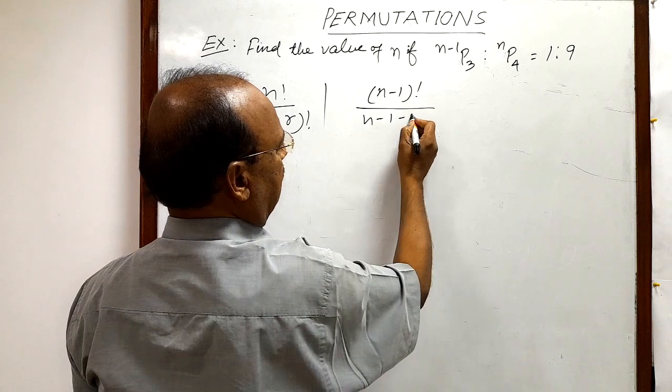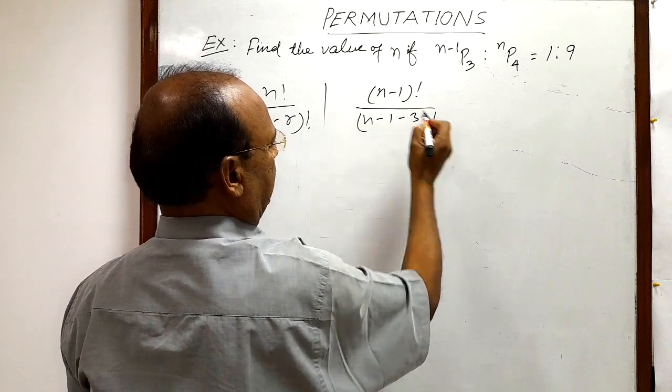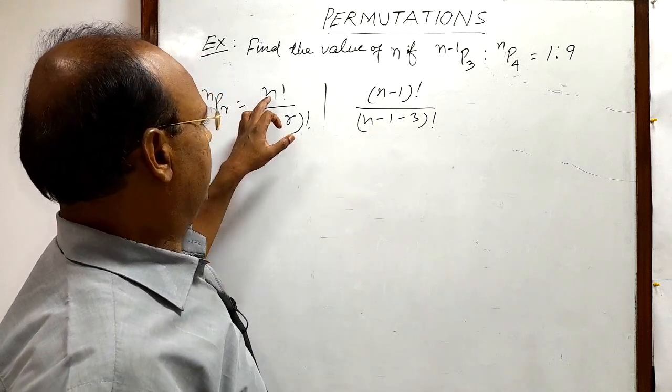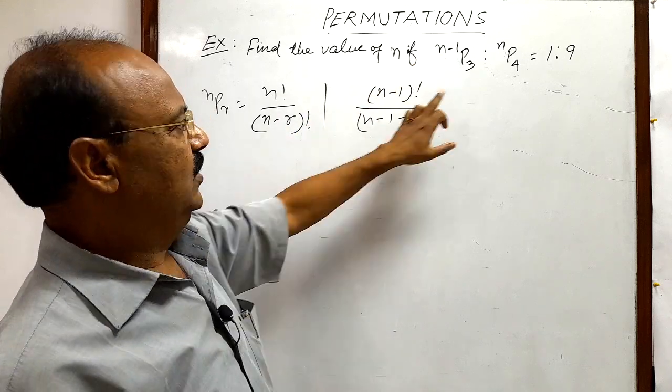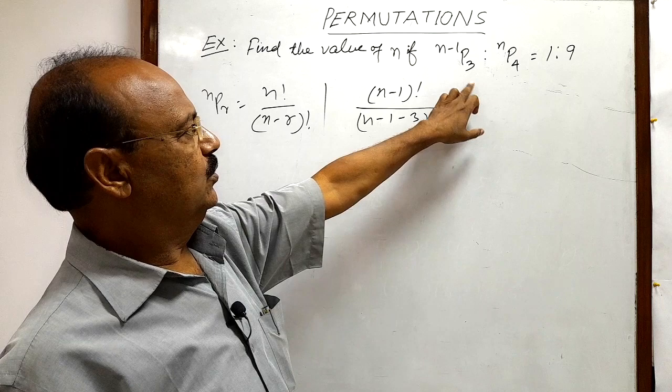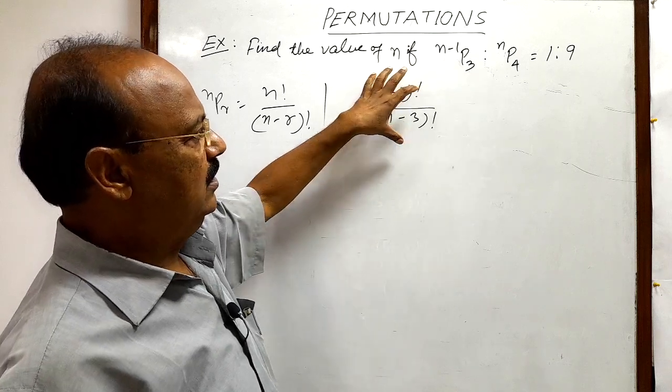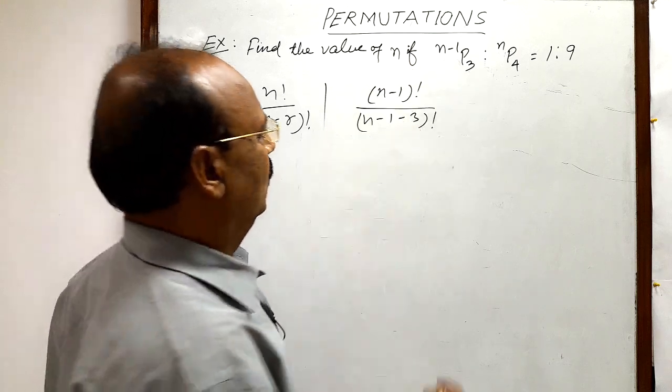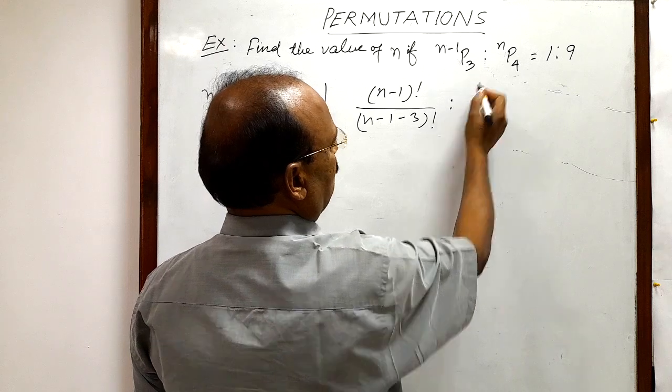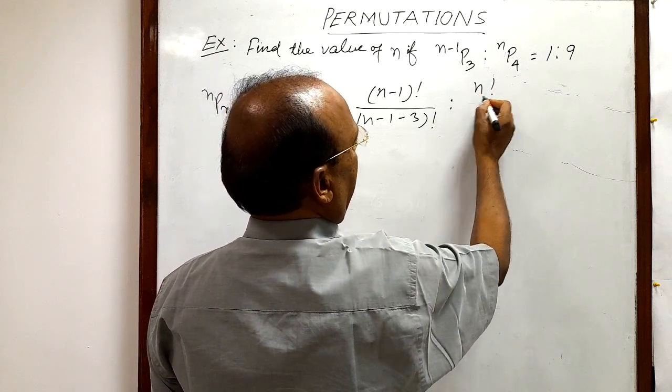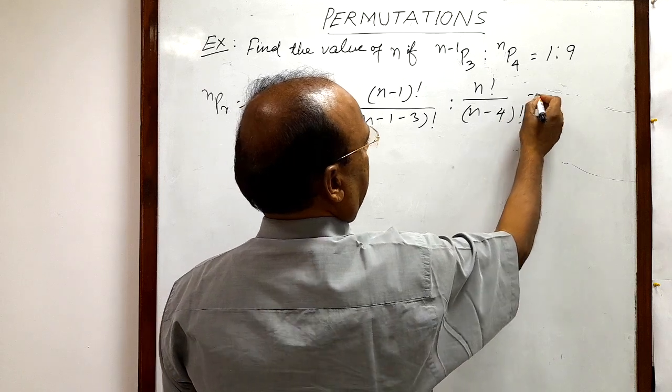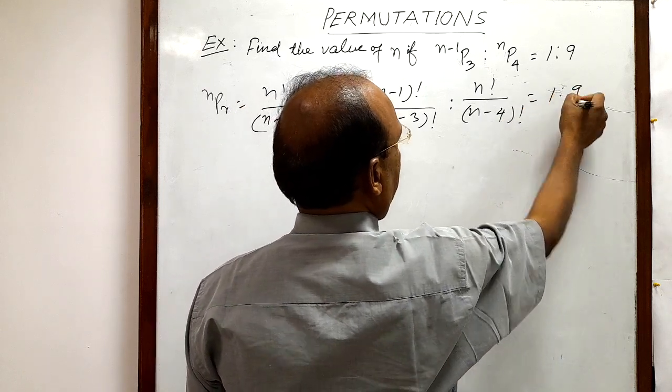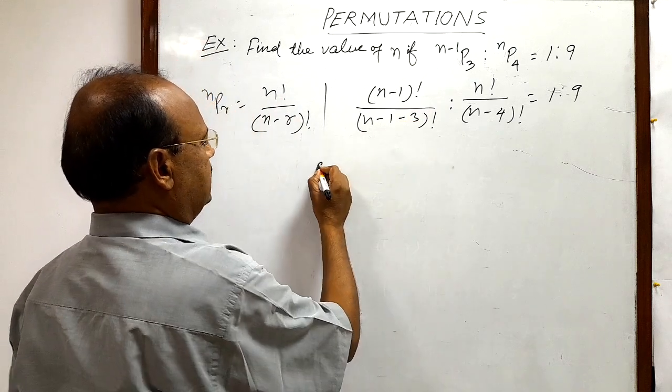So (n-1)P3 can be written like this. And nP4 is n! / (n-4)!. This is equal to 1/9. And this can be written as (n-1)! divided by...